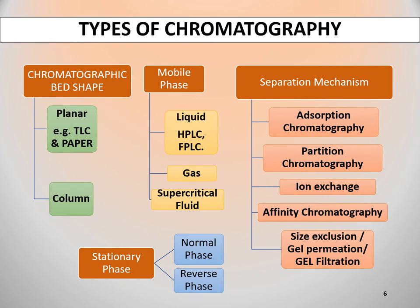Chromatography is divided into different types on the basis of different factors. On the basis of chromatographic bed shape — the stationary phase is sometimes called the chromatographic bed — chromatography is of two types: planar chromatography and column chromatography. Planar chromatography employs a planar stationary phase, for example TLC and paper. Paper chromatography uses cellulose, a polar substance, as a stationary phase. TLC involves a stationary phase of a thin layer of adsorbent like silica gel, alumina or cellulose on a flat inert substrate. In column chromatography, the stationary phase is packed into a glass or metal column.